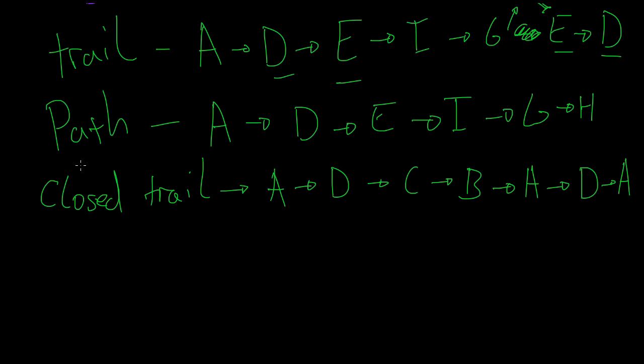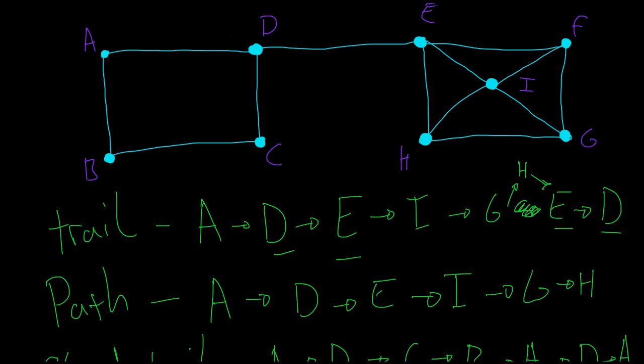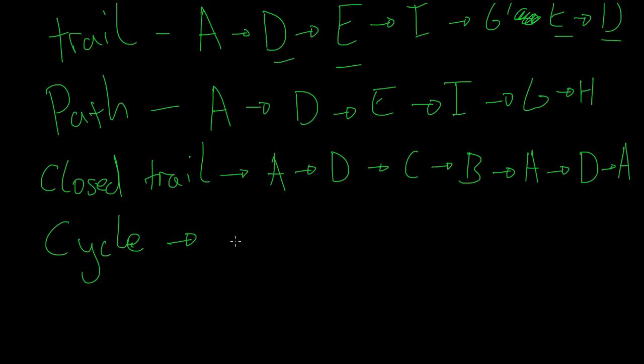But then, if we apply the restriction we did to a path where we can't go on the same node more than once, that is called a cycle. That is, like a path, something where we can't go on the same node more than once, but we start and finish on the same node. So an example here is A, D, C, B, A. Another one that we could do is F, I, G, H, E, F. So we can't go on the same node more than once, but we still have to start and finish on the same node. So we do A, B, C, D, A.